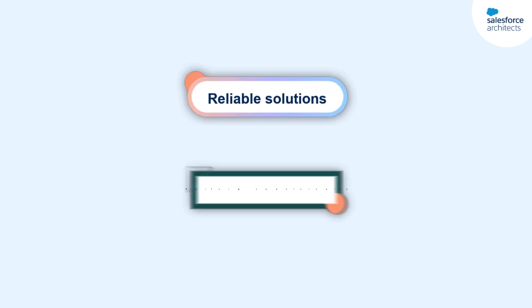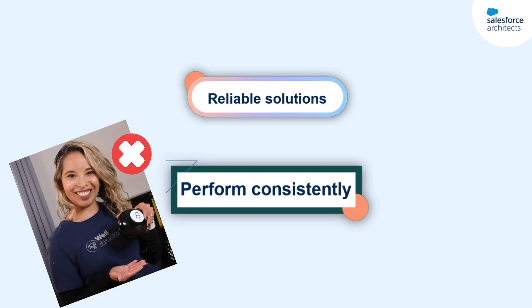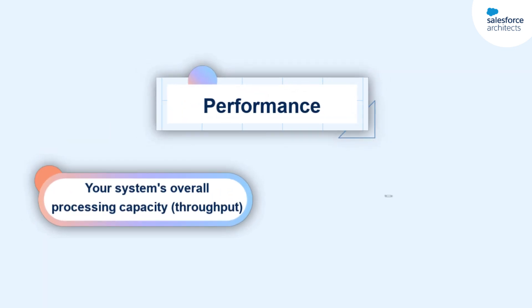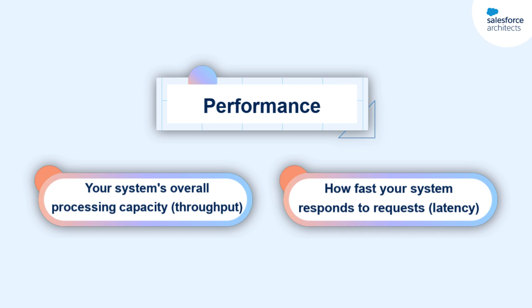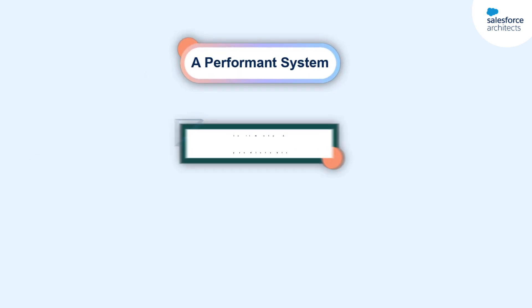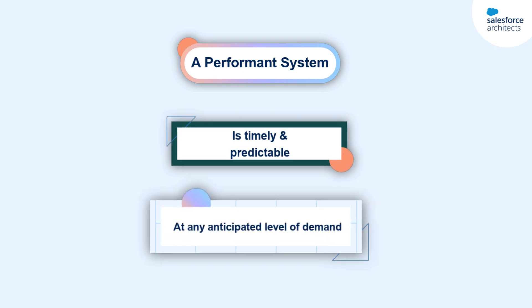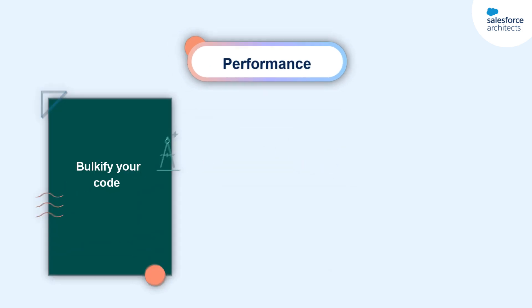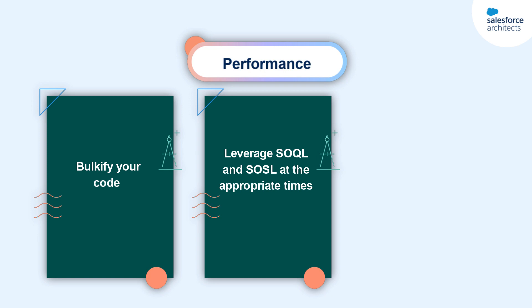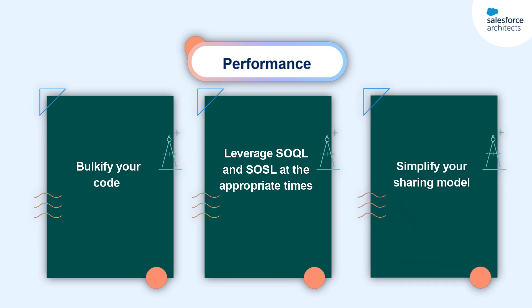Reliable solutions also perform consistently. Performance in this context refers to the system's overall processing capability and how fast the system responds to requests. A system with good performance completes processes in timely and predictable ways at any anticipated level of demand. As architects, we can design for performance by bulkifying code, leveraging SOQL and SOSL at the appropriate times, and simplifying our sharing model.